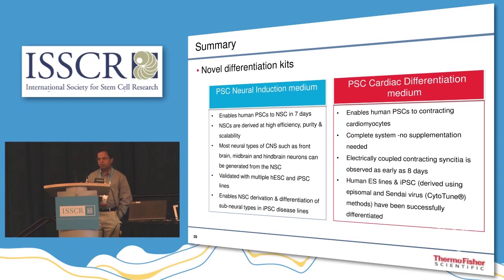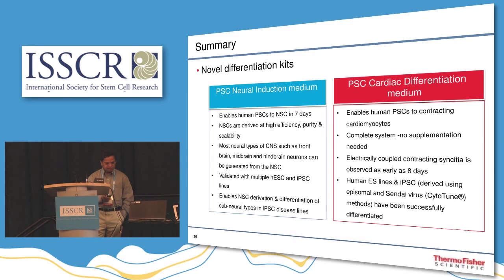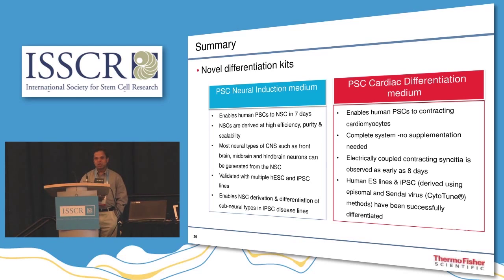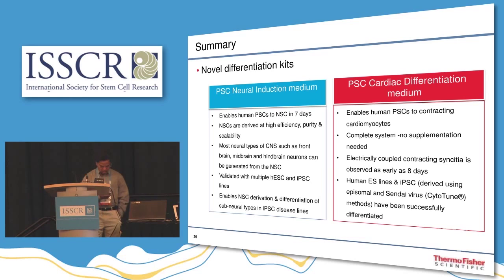On the cardiac side, the cardiac differentiation medium enables pluripotent cells to generate contracting cardiomyocytes by day 8–9. The complete system requires no supplementation beyond the provided 1X media. Electrically coupled activity has been observed as early as 8 days. Human ES lines and iPSC episomal lines have shown this, and beta testers have used it with disease human iPSC lines for LQTS and ventricular disease models.